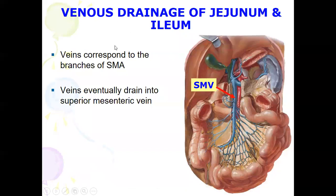For the venous drainage of the jejunum and ileum, it is drained by the superior mesenteric vein. The vein corresponds to the branches of the superior mesenteric artery with similar names. All branches drain into the superior mesenteric vein.